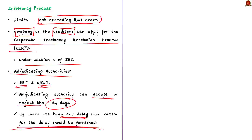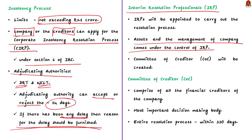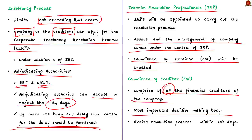Once the application is accepted by the adjudicating authority, the resolution process begins and Interim Resolution Professionals are appointed. The assets and management of the company then come under control of the Interim Resolution Professionals. A Committee of Creditors comprising all financial creditors is created — it is the most important decision-making body deciding whether the company should be restructured or liquidated. The entire resolution process must be completed within 330 days as per the provisions of the act.